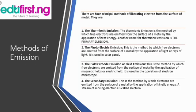Let's move on to the methods of emission. There are four principal methods of liberating electrons from the surface of metal. The first is thermionic emission. Thermionic emission is the method by which free electrons are emitted from the surface of the emitter by the application of heat. Another name for thermionic emission is filamentary emission — this is when heat is applied to a metal, causing the movement of electrons and releasing them from the metal.